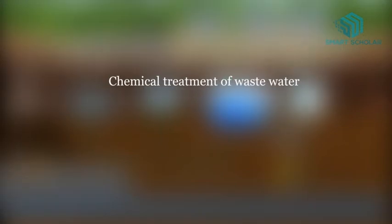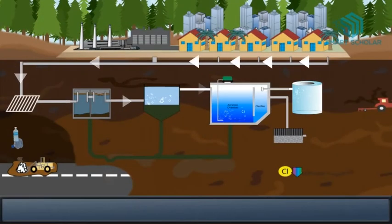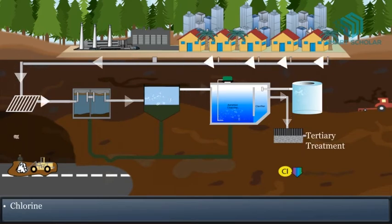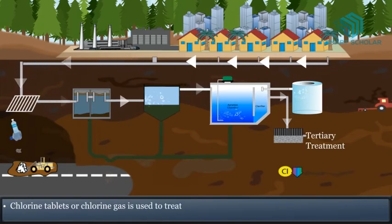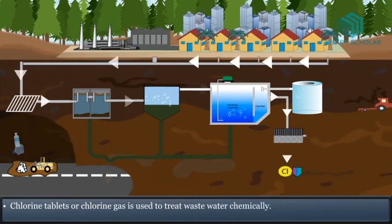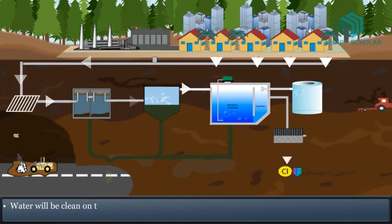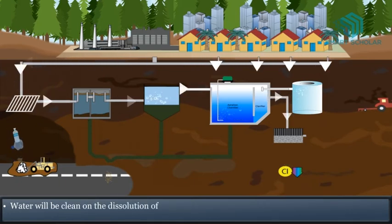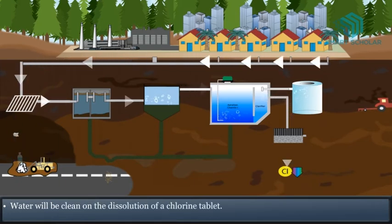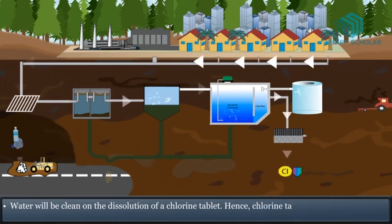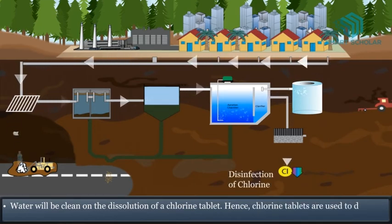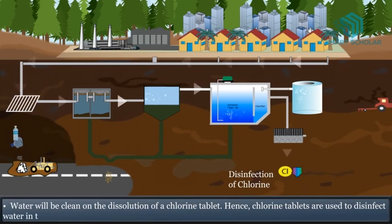Chemical treatment of wastewater. Chlorine tablets or chlorine gas is used to treat wastewater chemically. Water will be clean on the dissolution of a chlorine tablet. Hence, chlorine tablets are used to disinfect water in treatment plants.